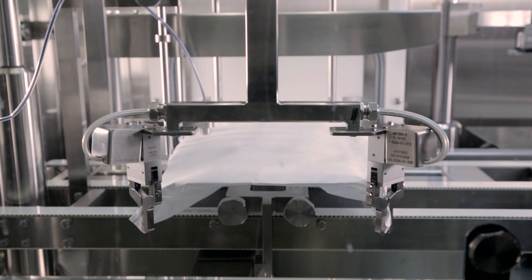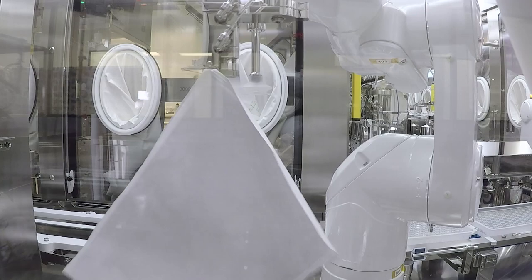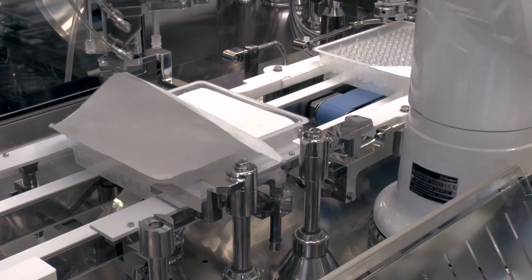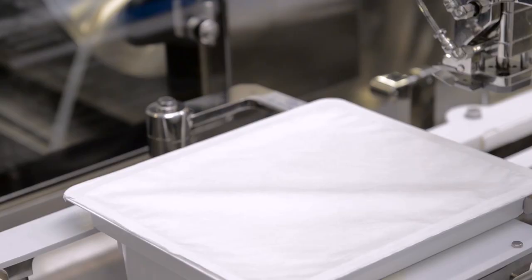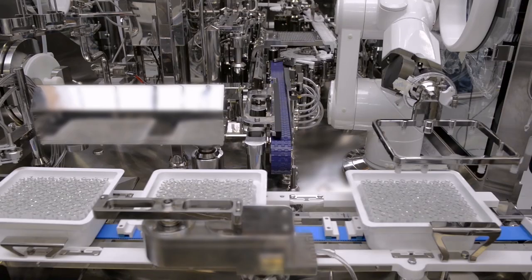The automated tub lid and liner removal system is contained within a barrier isolator, minimizing human manipulation and lessening the risk of product contamination. Lids and liners are removed by the Tyvek removal robot requiring no human personnel. A sensor system is in place to verify removal of the lid and liner, ensuring that the component is ready to be filled.